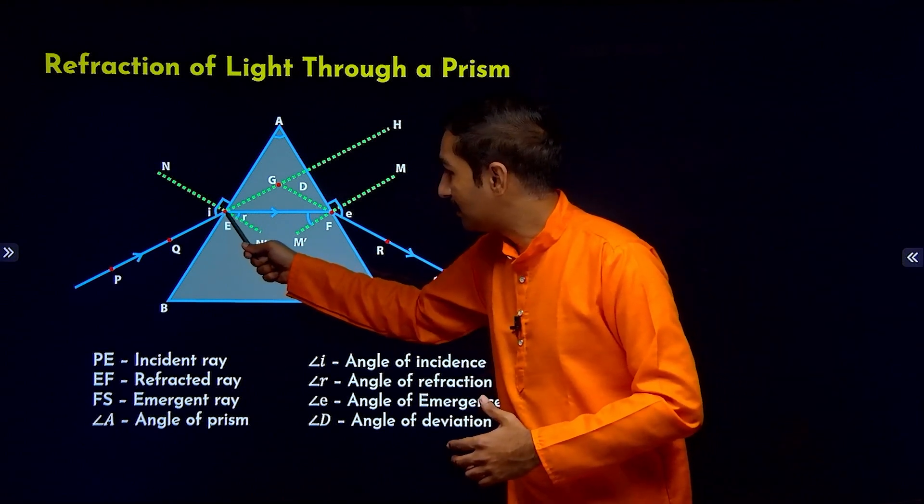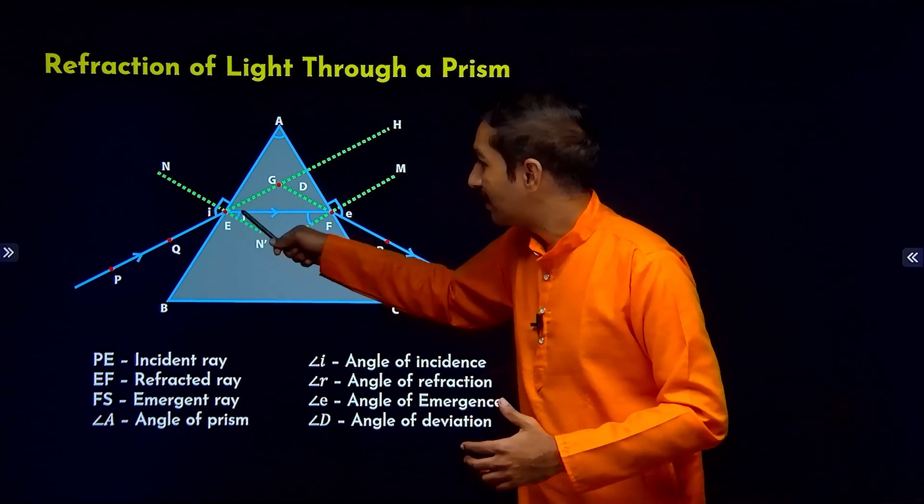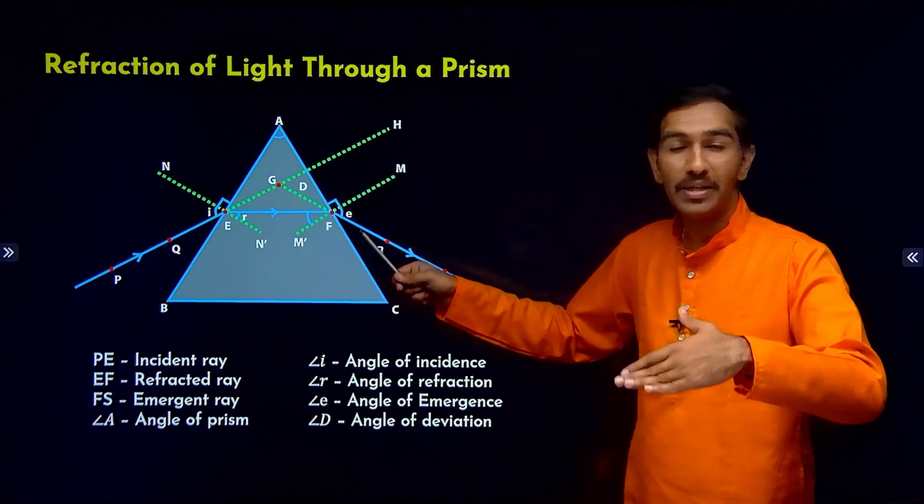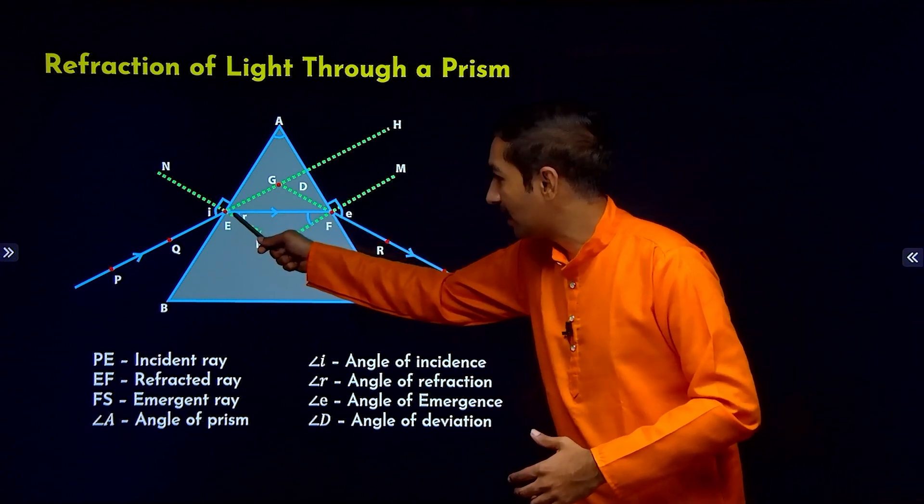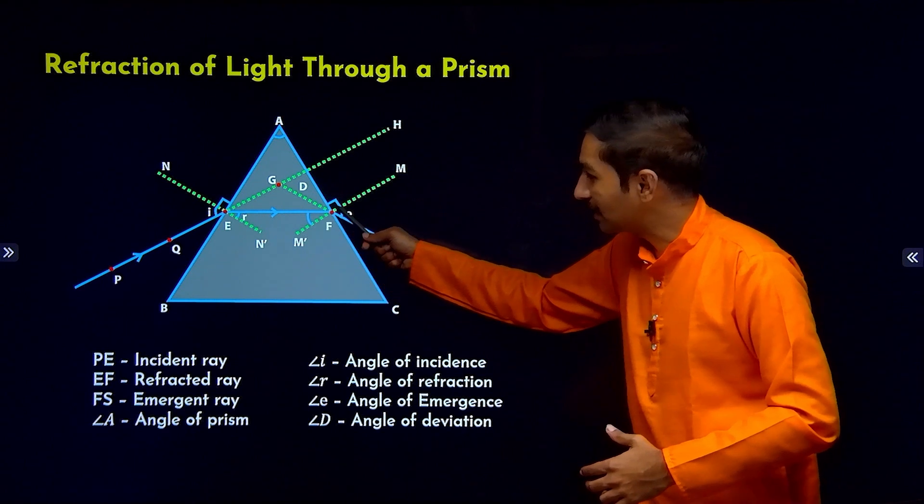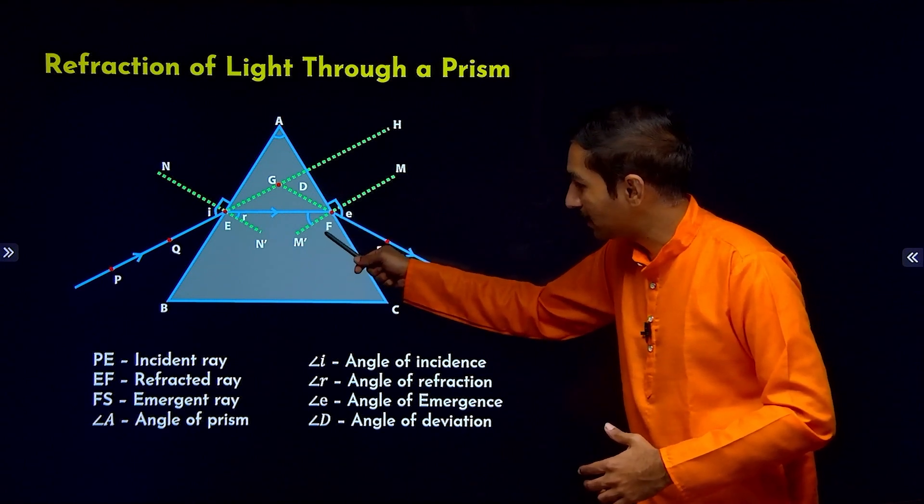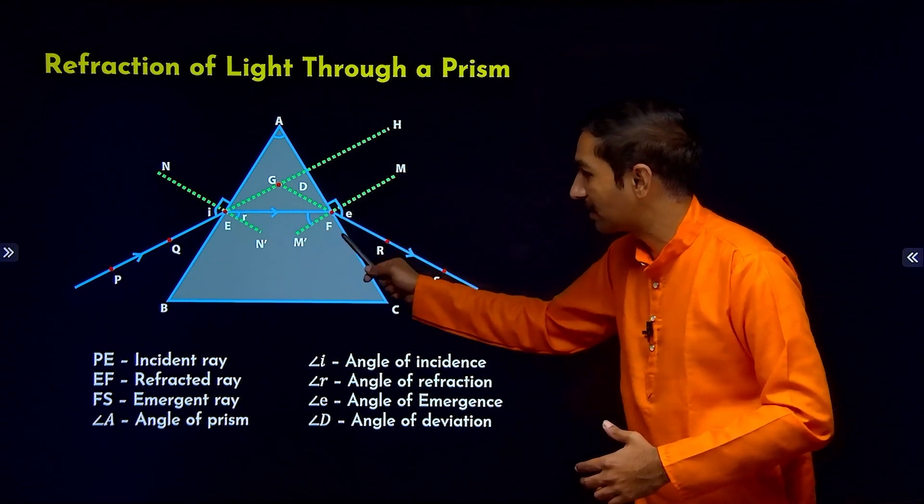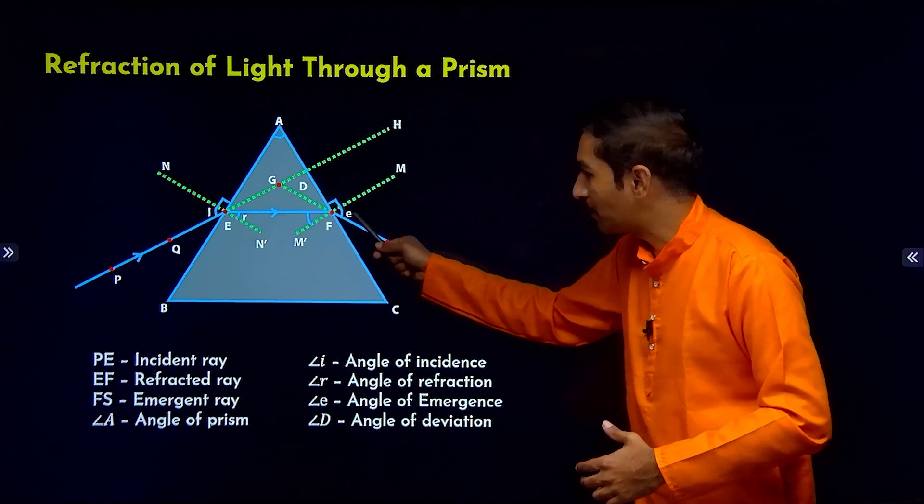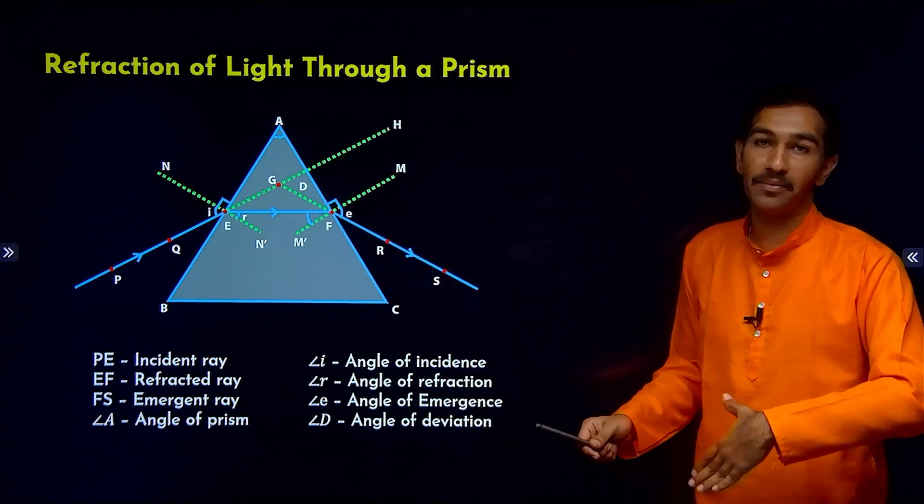This bending of light - how does light bend? It bends towards the normal, correct, towards the normal. Then when light travels from denser medium to the rarer medium, it moves away from the normal, okay, away from the normal.